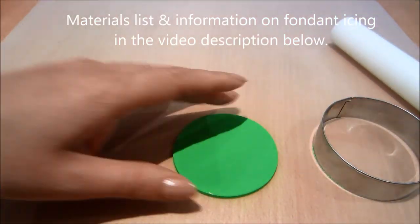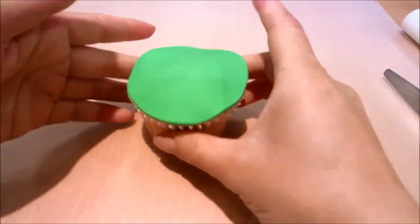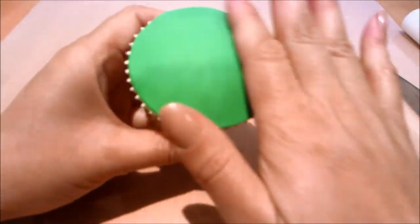I've used my circle cutter to cut out a disc of fondant. Now I'm smoothing it over on top of my cupcake.